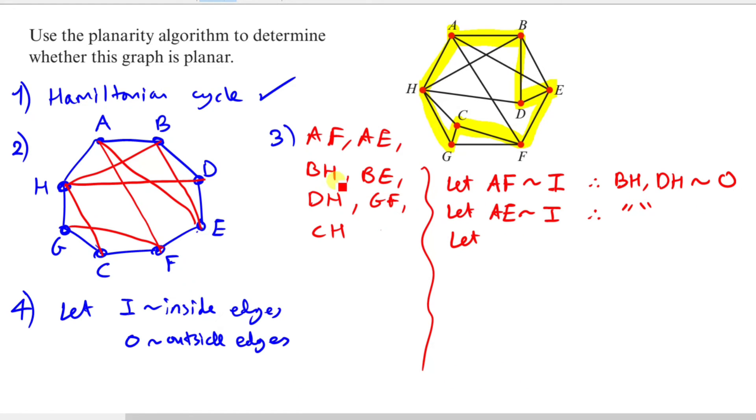Now that we've defined BH and DH, we can ignore them. So let's look at BE. If BE was inside, only DH. So again, it's basically the same thing. Let's look at GF now. Let GF be inside. If GF is inside, we can see that CH is crossing. So therefore CH is outside. And that's it.